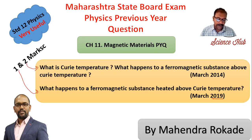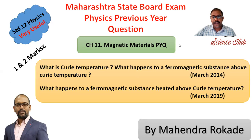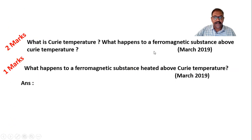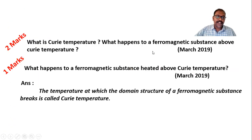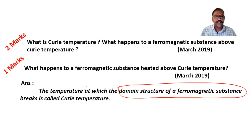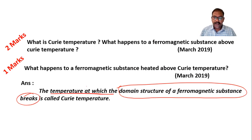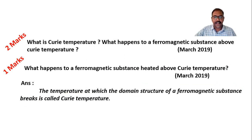Now let's see the solution. The Curie temperature is the temperature at which the domain structure of a ferromagnetic substance breaks or is destroyed. The temperature at which the domain structure of a ferromagnetic substance is destroyed is called the Curie temperature.